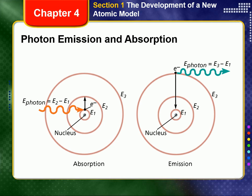The success of Bohr's model of the hydrogen atom in explaining observed spectral lines led many scientists to conclude that a similar model could be applied to all atoms. It was soon recognized, however, that Bohr's approach did not explain the spectra of atoms with more than one electron. Nor did Bohr's theory explain the chemical behavior of atoms.